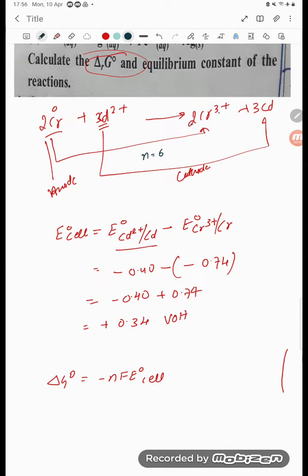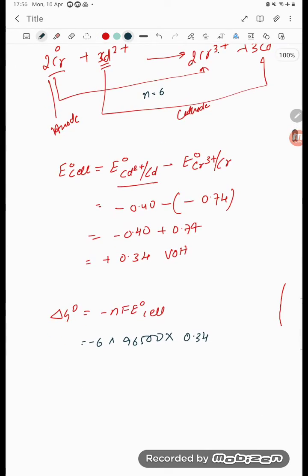So here, how can we do it? If you are solving, here is -6 multiplied by 96,500, E°cell is 0.34 volts. So it is coming, how much? -196,860 coulomb volts per mole. So this is our answer, student.